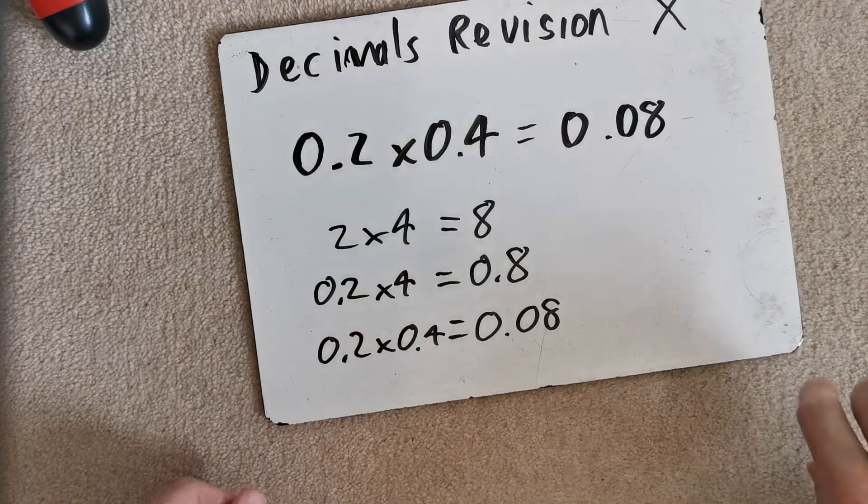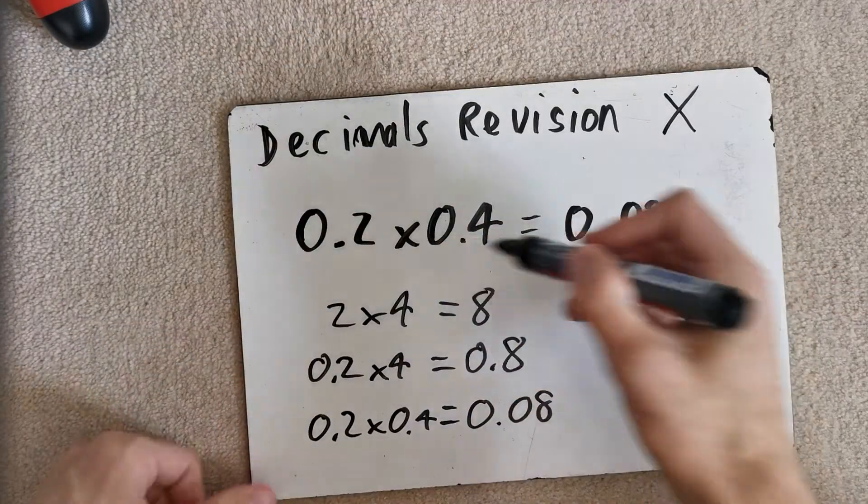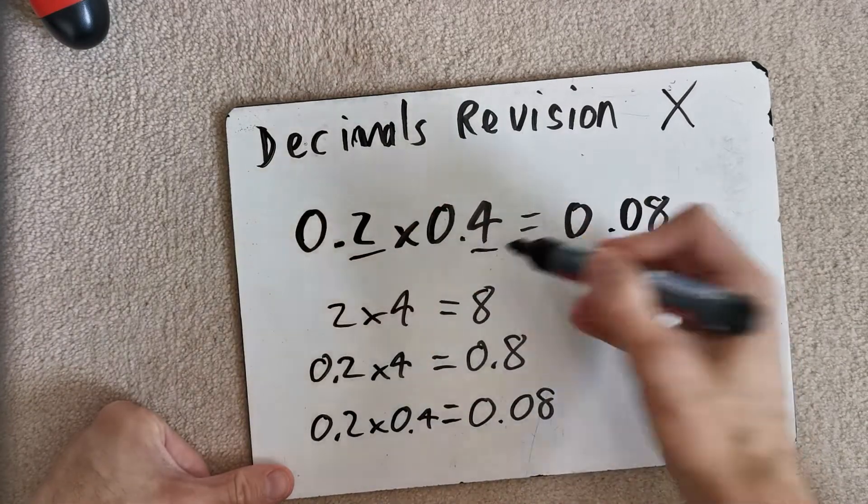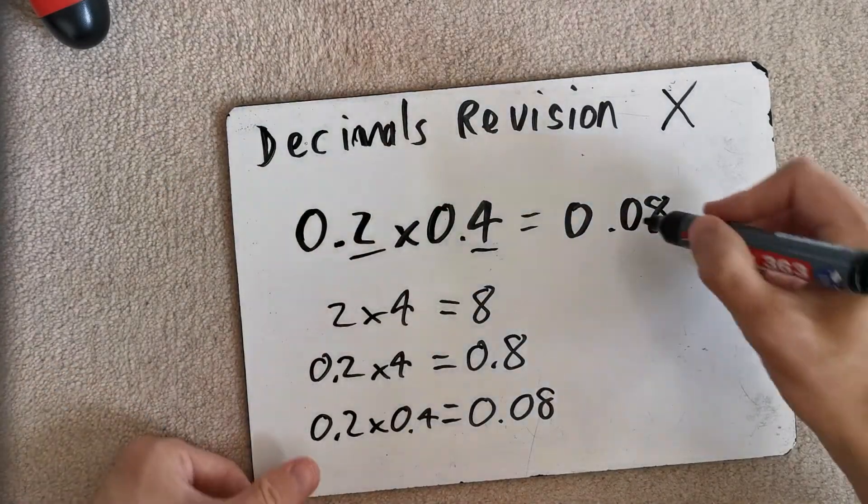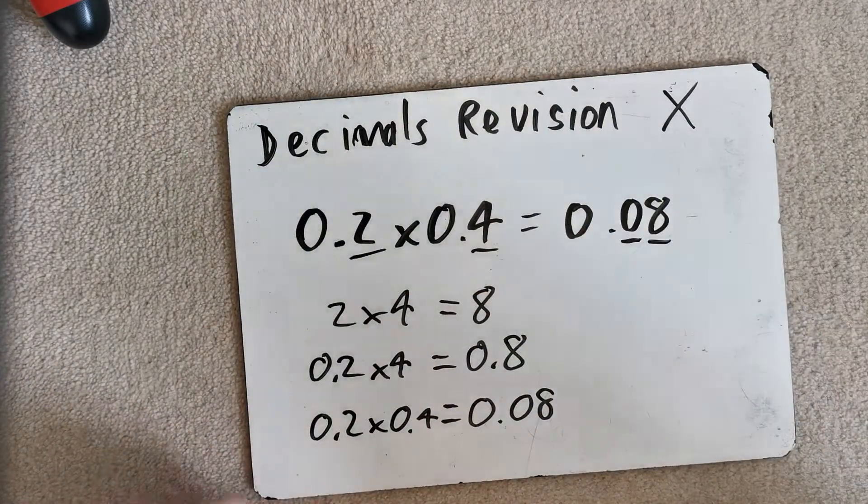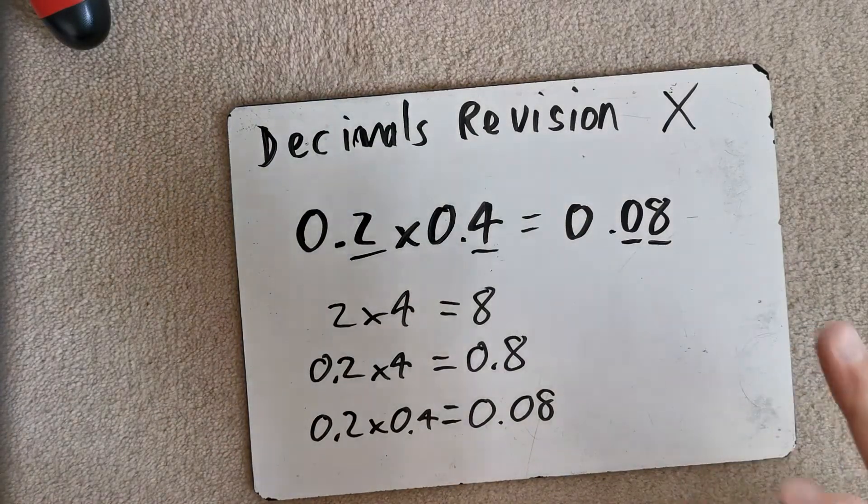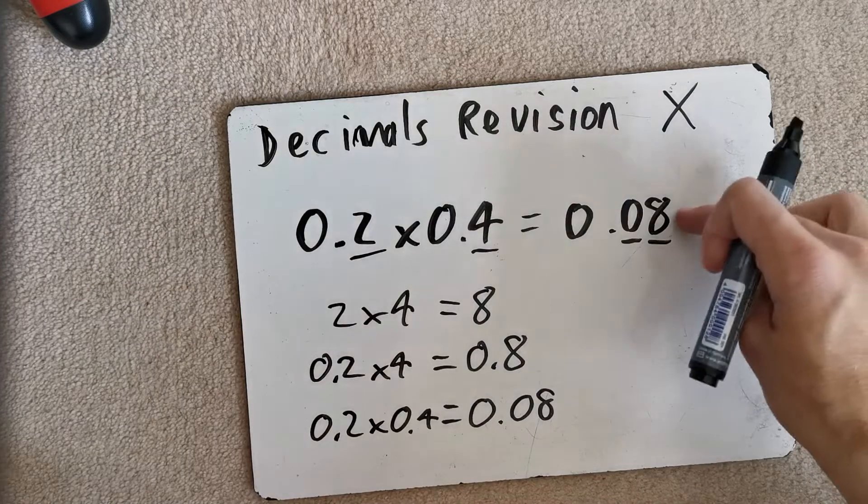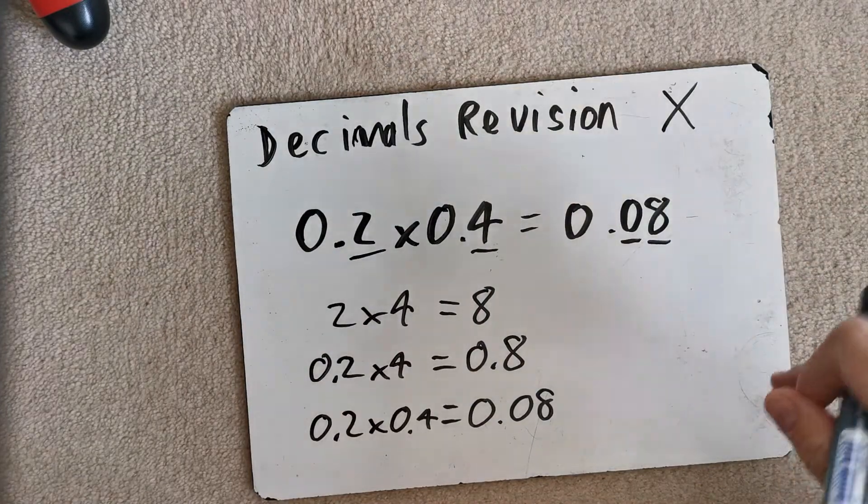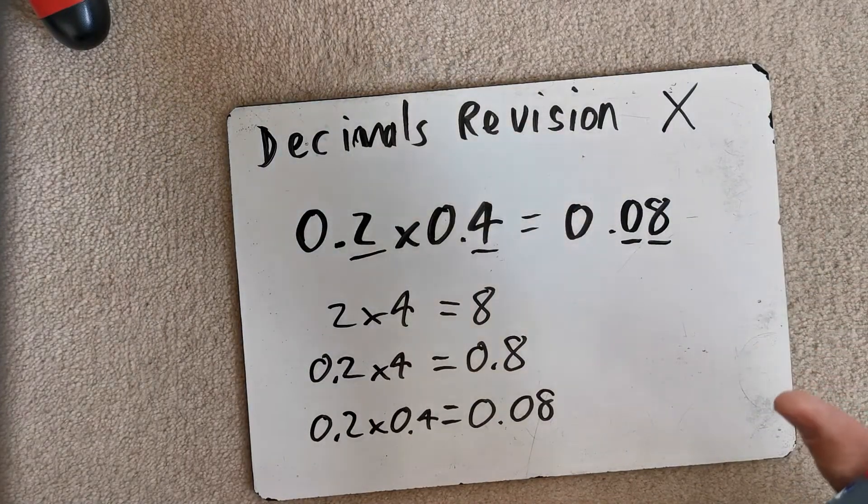Okay, right. Now, the rule is, the general rule is, however many decimal places there are in the question will be the amount in this kind of initial answer. Okay, the reason why I say initial answer is because sometimes you might have zeros at the end. You can't just wipe them off. Okay, there we go.